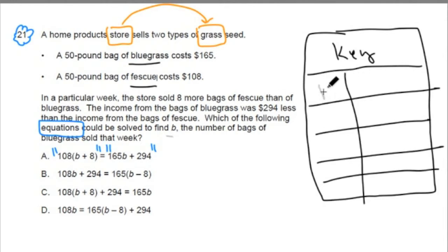Like for example, B. B is a variable and it says here B is the number of bags of bluegrass, right? And in this first line here it says the store sold 8 more bags of fescue than bluegrass. So 8 more bags of B would be B plus 8 and that would be the number of fescue. And it tells us here that bluegrass costs $165.